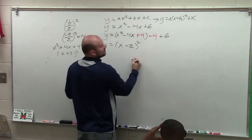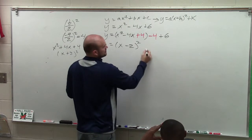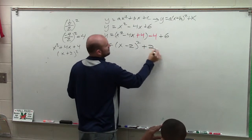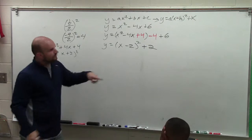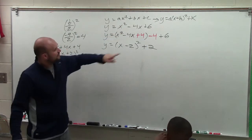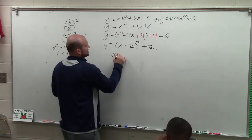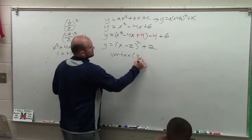Negative 2. Then negative 4 plus 6 is positive 2. And there you go. We have now converted it from standard form to vertex form, where now you can say the vertex is (2, 2).